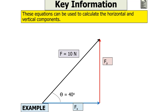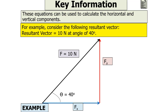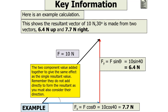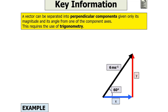These equations can be used to calculate both horizontal and vertical components of a resultant vector. For example, consider a resultant vector of 10 newtons at an angle of 40 degrees to the horizontal. The vertical component is Fy equals F sin theta, so 10 sin 40 equals 6.4 newtons upwards. The horizontal component is Fx equals F cos theta, so 10 cos 40 equals 7.7 newtons to the right. Remember, they don't add directly — you must consider the direction they act in.